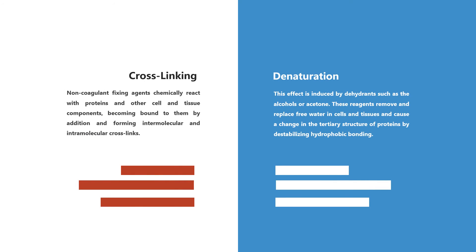The two main mechanisms of chemical fixation are crosslinking and denaturation. Crosslinking: non-coagulant fixing agents chemically react with proteins and other cell and tissue components, becoming bound to them by addition and forming intermolecular and intramolecular crosslinks. This can affect the subsequent staining of a particular protein as well as altering its molecular conformation and thus its solubility. Denaturation is induced by dehydrants such as alcohols or acetone, which remove and replace free water in cells and tissues and cause a change in the tertiary structure of proteins by destabilizing hydrophobic bonding.